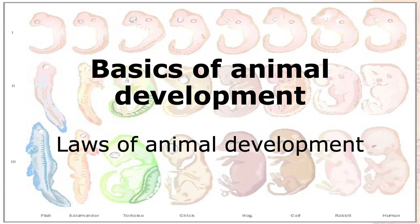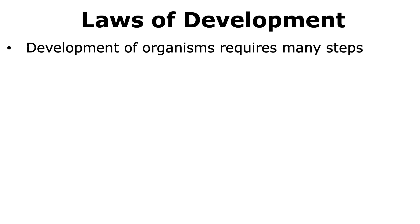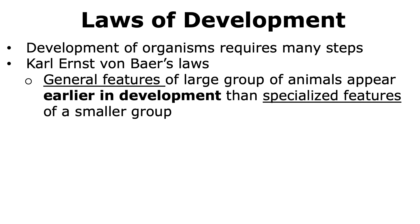Welcome to the Basics of Animal Development module. In this talk, we're going to learn about the laws of animal development — specifically Karl Ernst von Baer's laws of animal development. A German biologist named Karl Ernst von Baer stated four laws in 1828 that have been widely accepted by embryologists. In fact, he's sometimes considered the father of embryology.